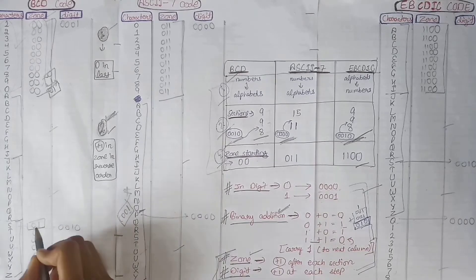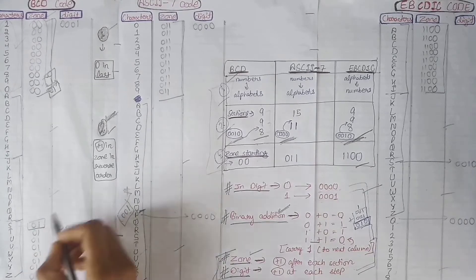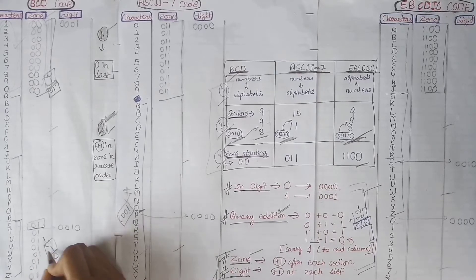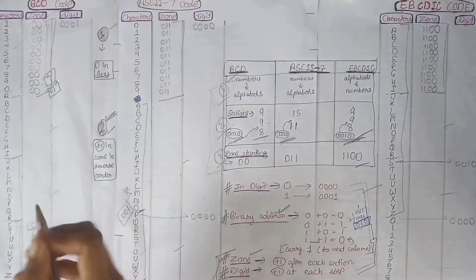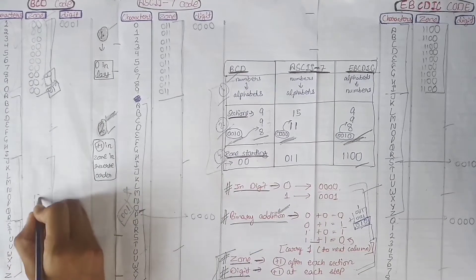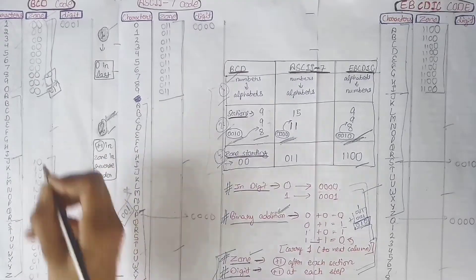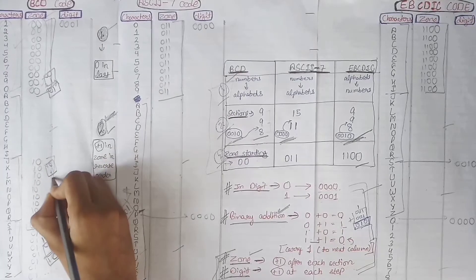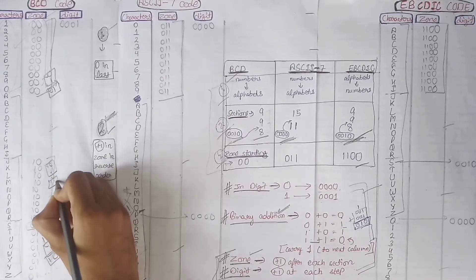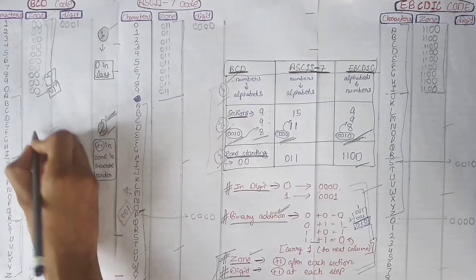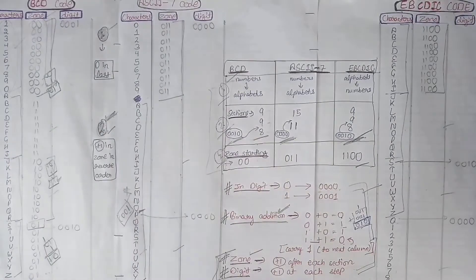We add 1 again to this value: 01 plus 1 — since 1+1=0 with carry 1 to the next column, and 1+0=1 — giving us 10. During this whole section we write 10. Then again we add plus 1: 10 plus 1 becomes 11, and we write 11 during all of that section.